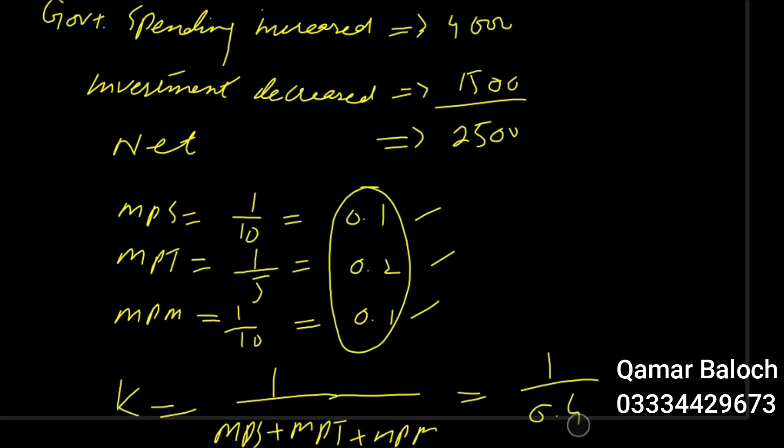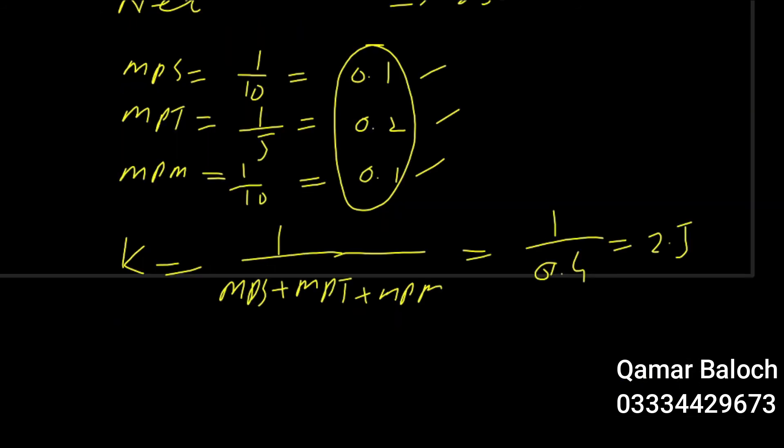So one over 0.4 is equal to 2.5. So the value of multiplier is 2.5.